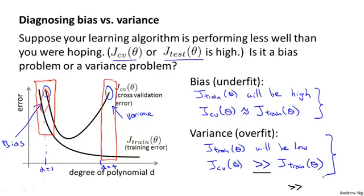The key that distinguishes these two cases is: if you have a high bias problem, your training set error will also be high — your hypothesis is just not fitting the training set well. If you have a high variance problem, your training set error will usually be low — that is, much lower than your cross-validation error.